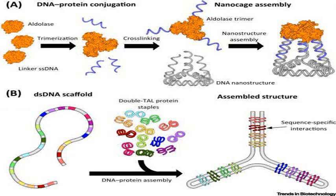Some naturally occurring proteins have a relatively small number of subunits and are therefore described as oligomeric — for example, hemoglobin or DNA polymerase.